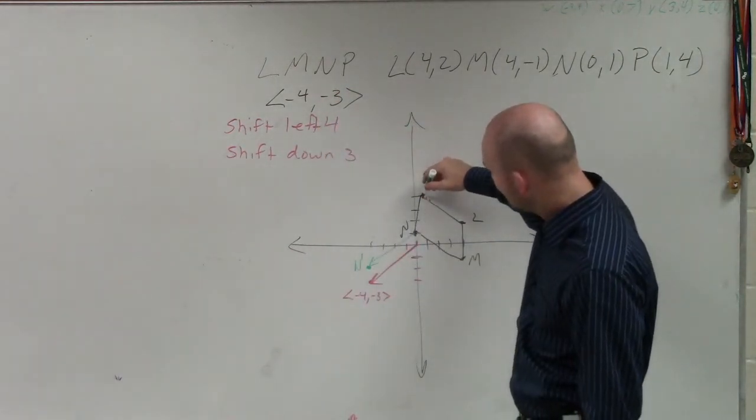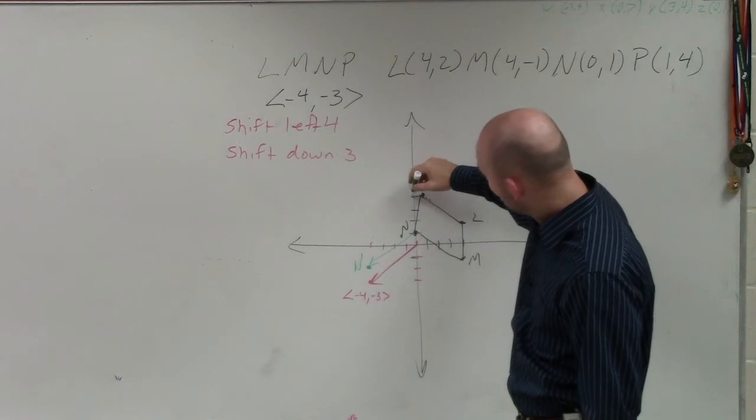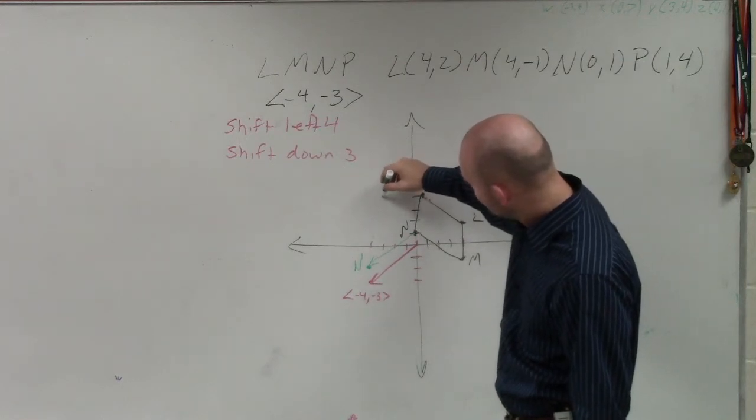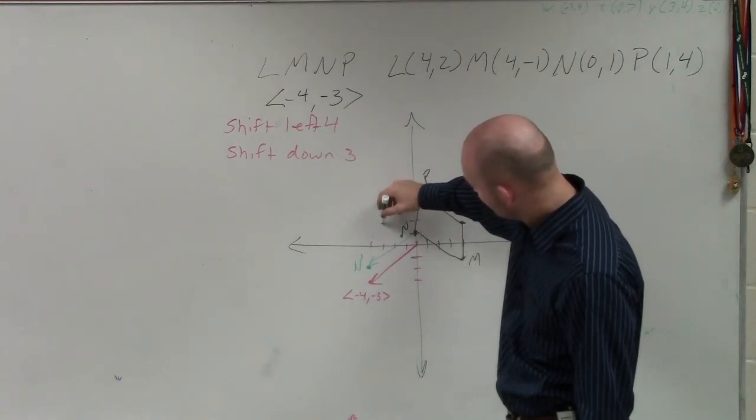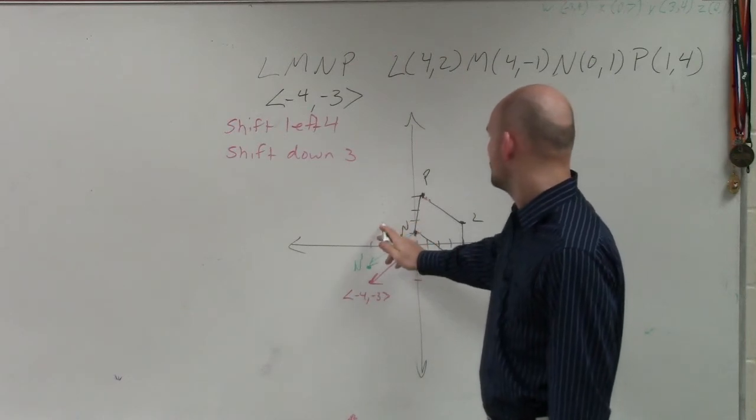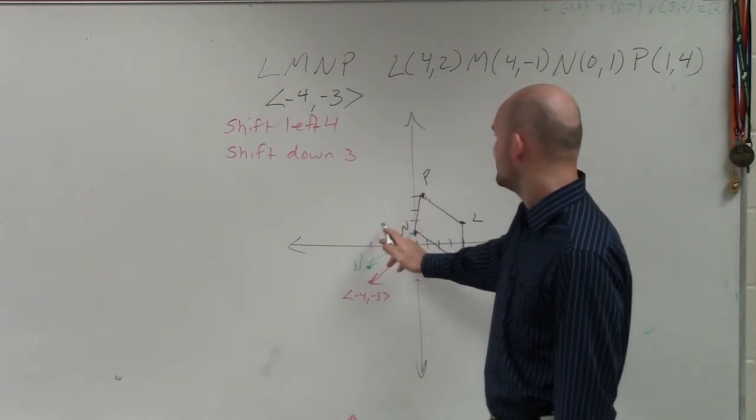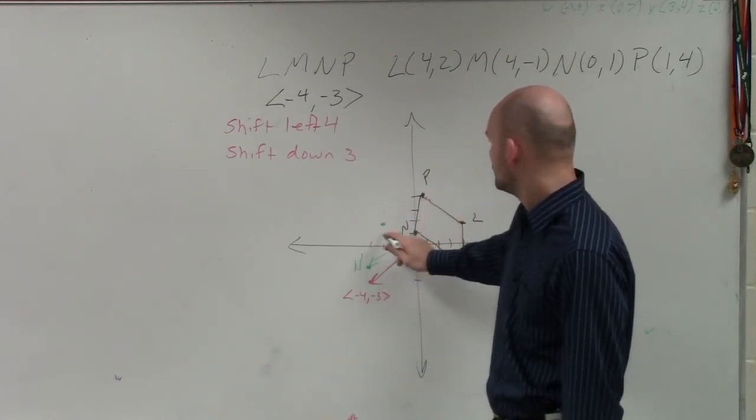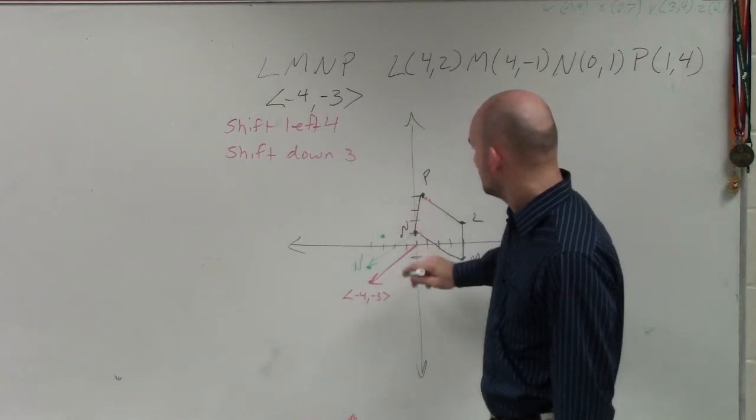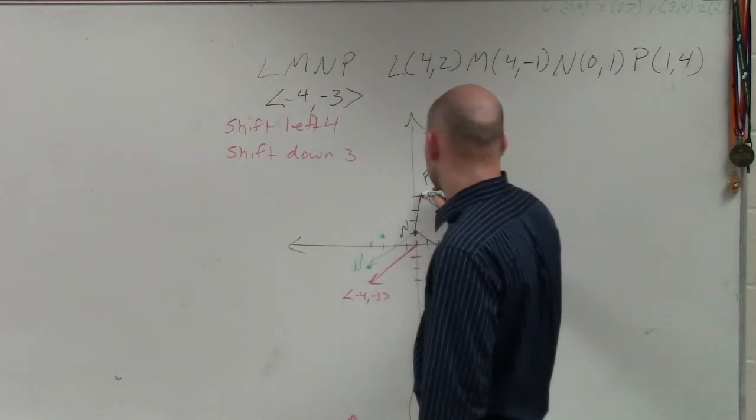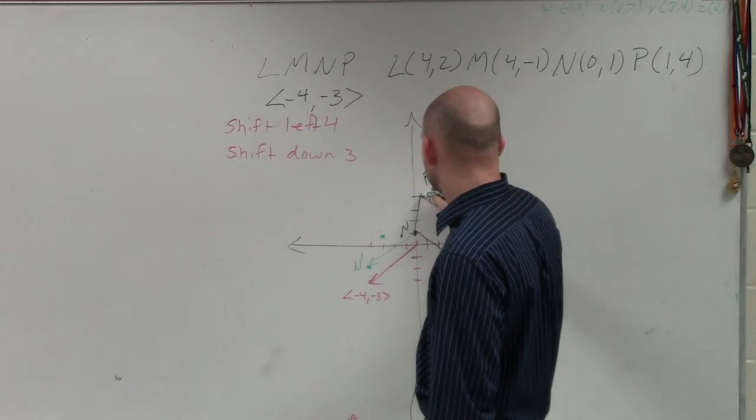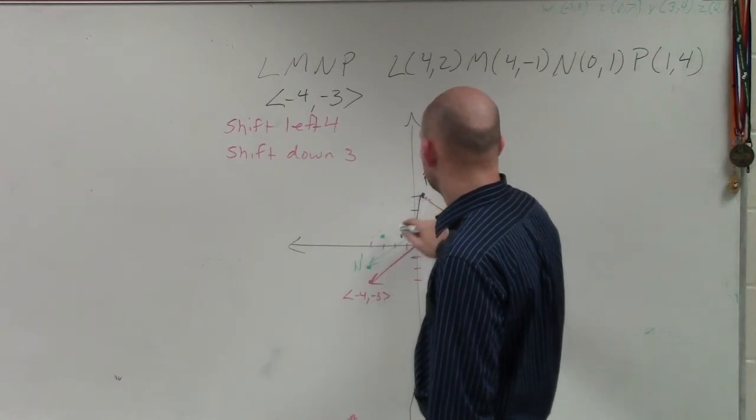If this is P, go left 4... 1, 2, 3, 4, down 3... 1, 2, 3. The angles are prime at each rivet? Yes. Yes. Wait. Oh, that's bad spacing. Geez. 1, 2, 3.